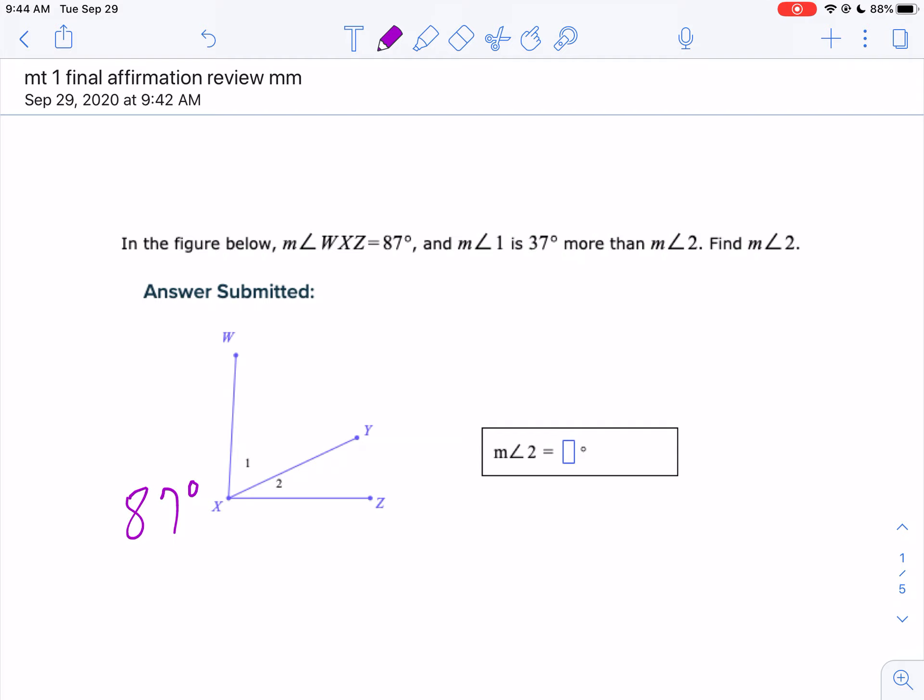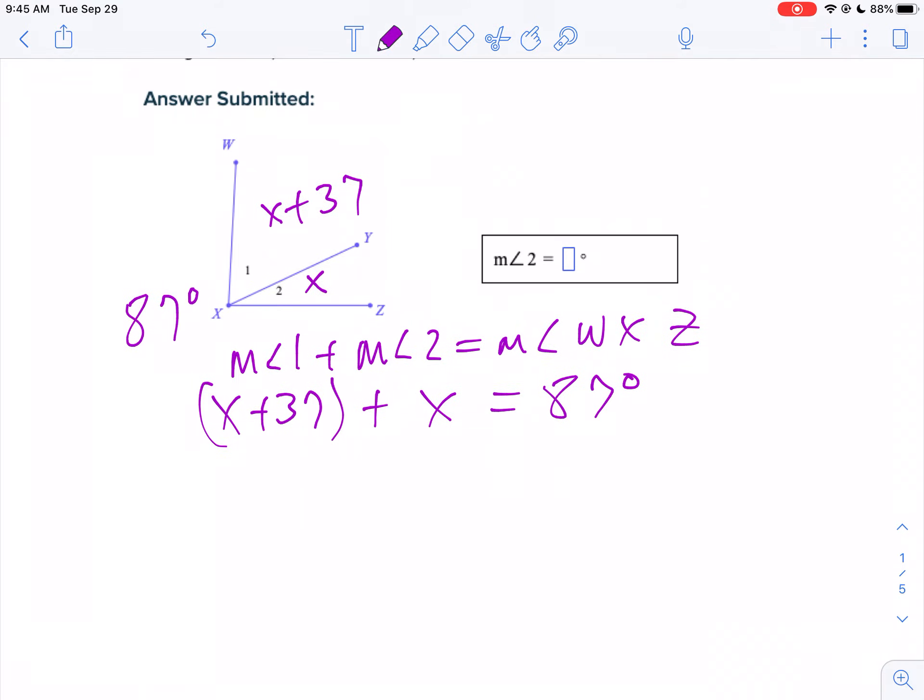Angle 1 is 37 more than angle 2, which means you don't know anything about angle 2. I'm going to call angle 2 X, so angle 1 is going to be 37 more than that. Notice it's not 37 degrees, it's 37 more than that. Now we can use our angle addition postulate that says if we take the measure of angle 1 plus the measure of angle 2, we get the measure of angle WXZ. Well, angle 1 is X plus 37, angle 2 is X, and angle WXZ is 87 degrees. The parentheses don't have a lot of meaning here other than to keep it organized. So it's really X plus 37 plus X equals 87 degrees.